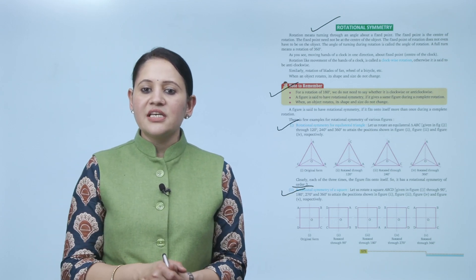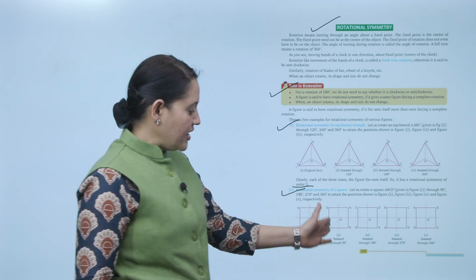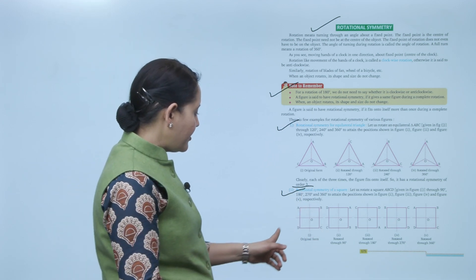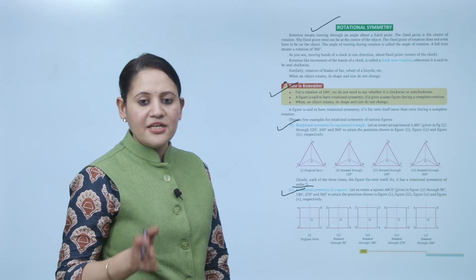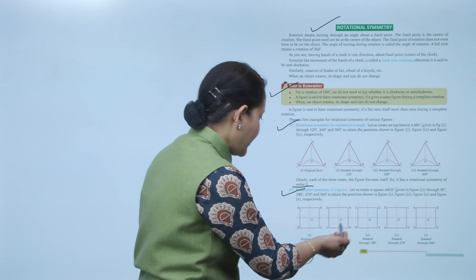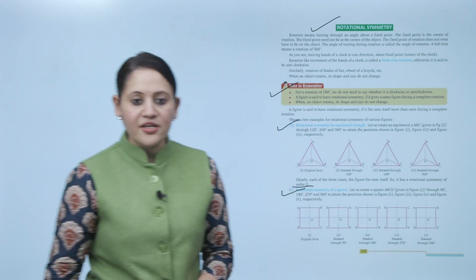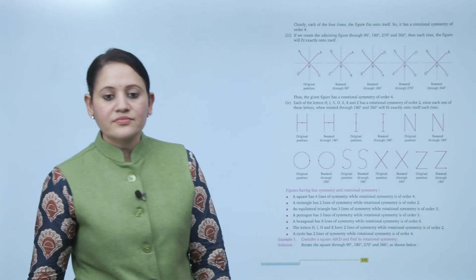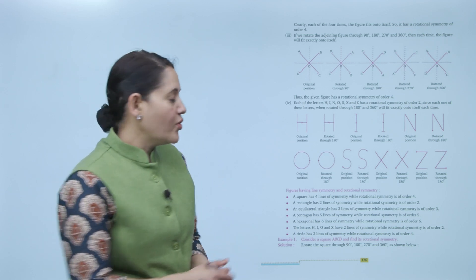Let us rotate square ABCD through 90 degrees, 180 degrees, 270 degrees, and 360 degrees to attain the positions shown in figures 2, 3, 4, and 5 respectively. In the original form, rotating 90 degrees brings D up and repositions A, B, and C. Rotating 180 degrees repositions all corners again. At 270 degrees and 360 degrees it returns to original position. The figure fits onto itself 4 times, so the square has rotational symmetry of order 4.